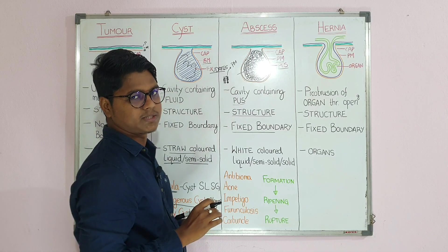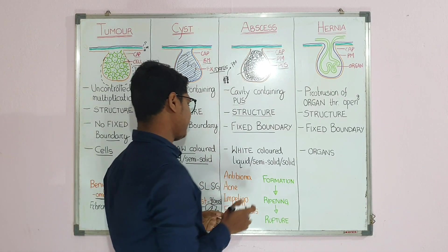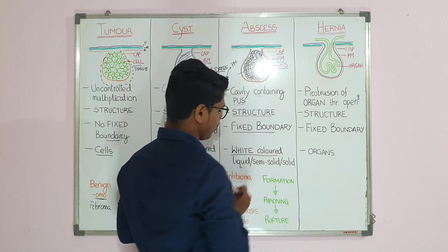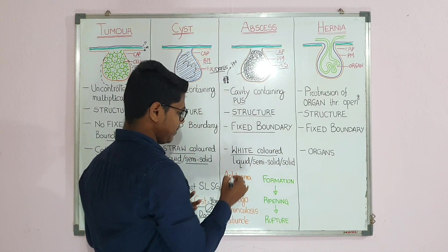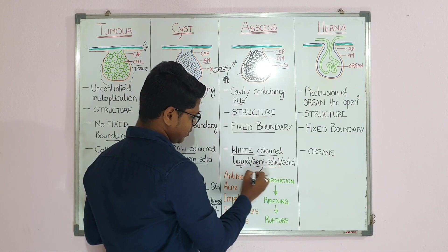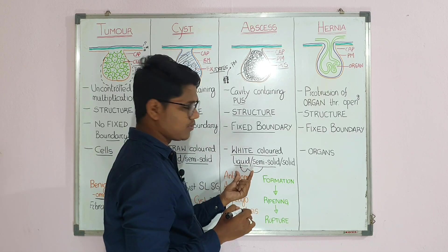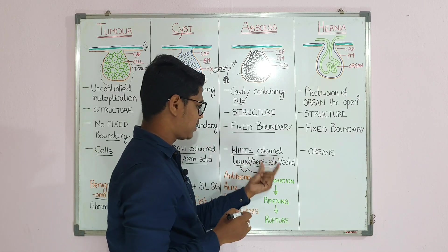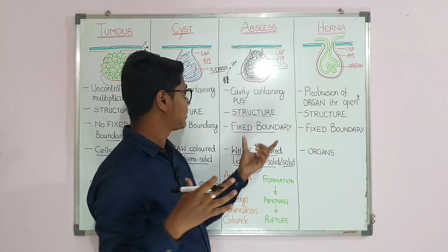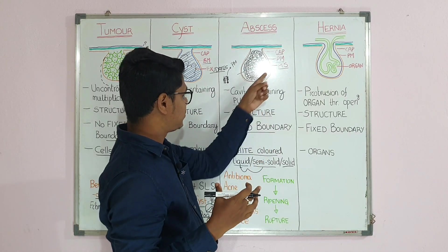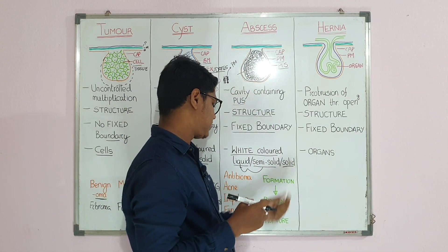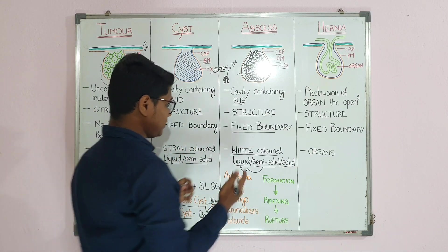The contents of an abscess are usually white in color and may be liquid or semi-solid — these two are the most common forms. In long-standing cases the fluid portion gets absorbed, so it becomes solid.